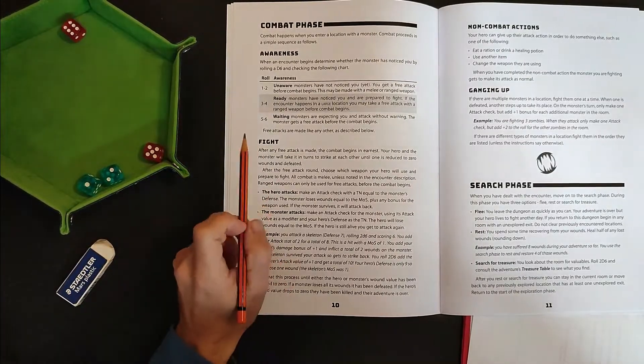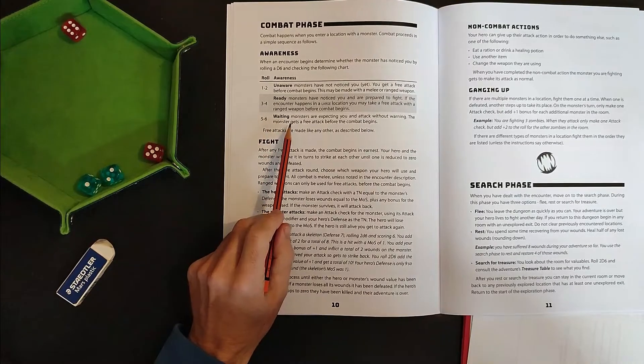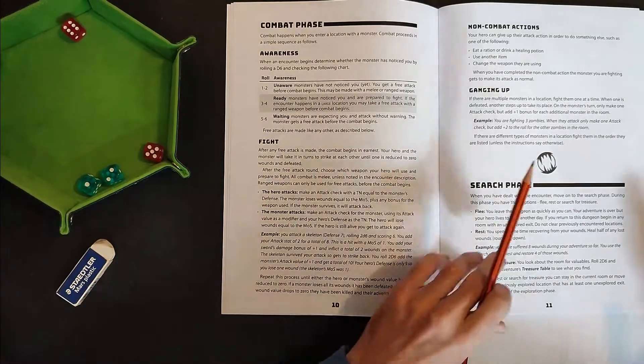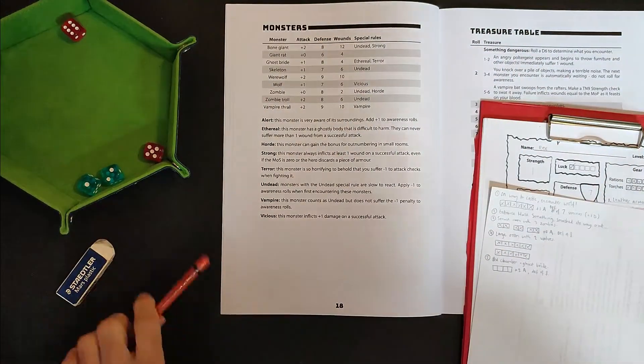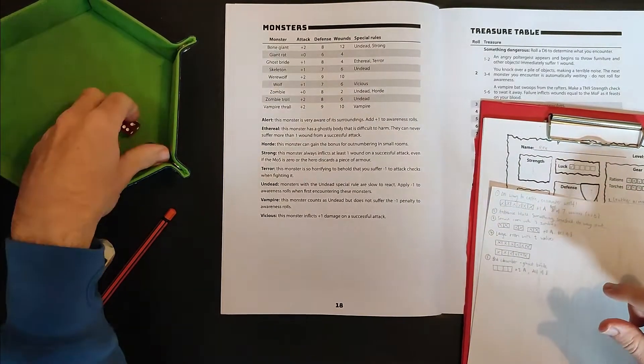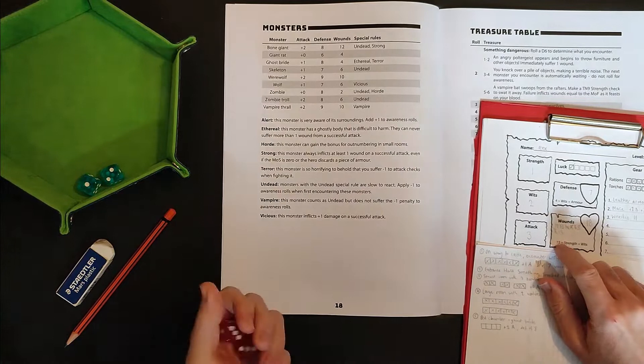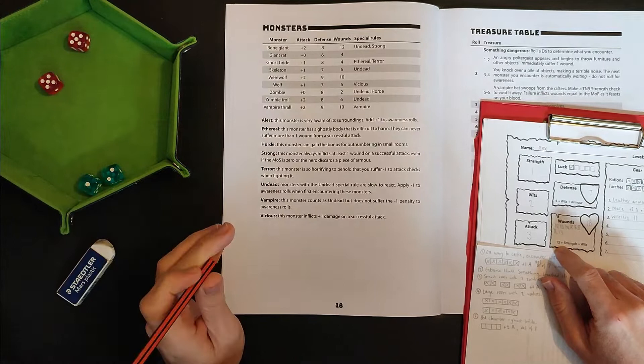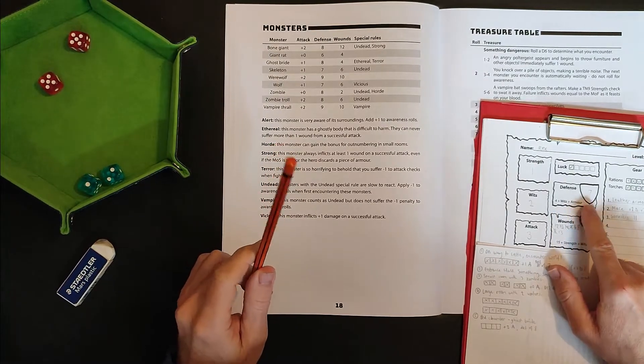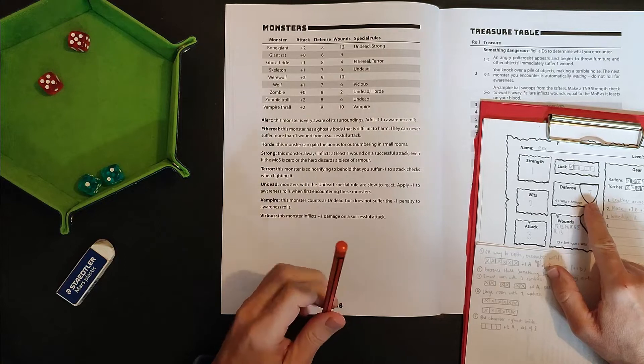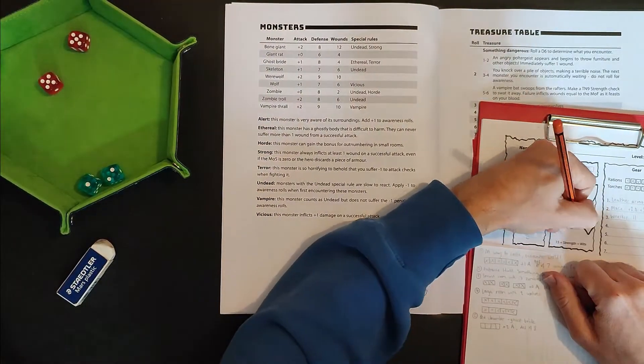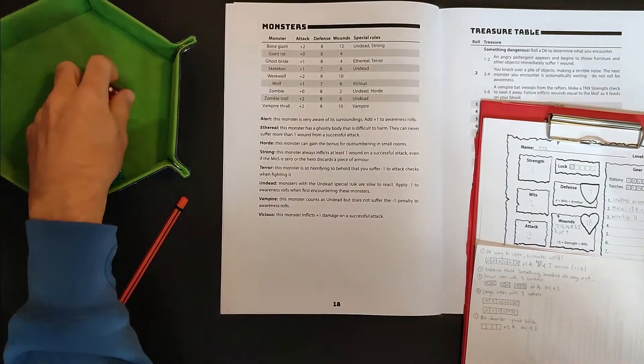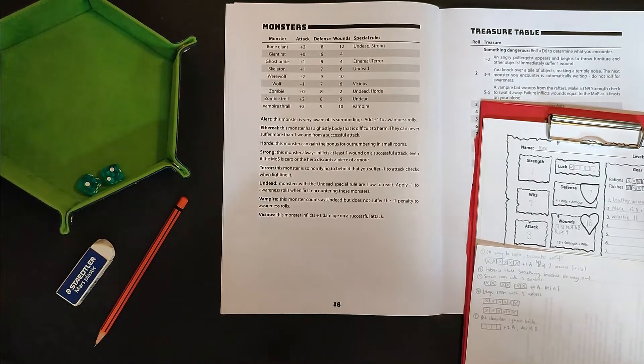Oh, the ghost is aware of us. And indeed waiting. Monsters are expecting you and attack without warning. The monster gets a free attack before combat begins. Curses. All right. So the monster gets plus one to attacks. Here we go. Oh, that's bad. 10, 11, because of the plus one. My defense is seven. So I'm taking four points of damage. I hope I don't die. I hope Rex doesn't die. Okay, so now we go into my first attack.